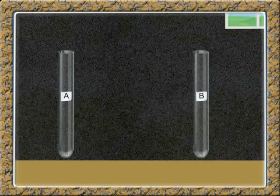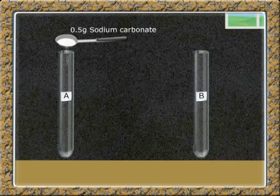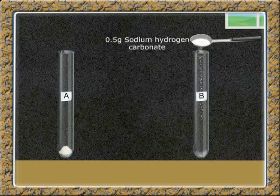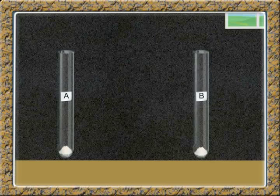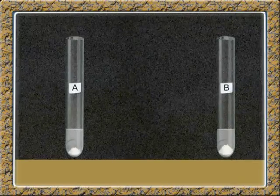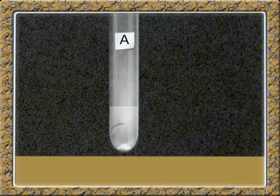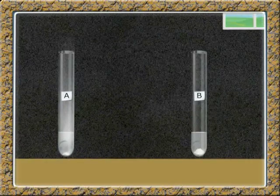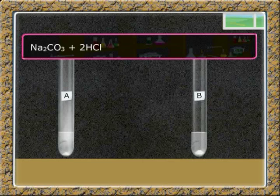Now take two test tubes and label them A and B. Take about 0.5 grams of sodium carbonate in test tube A, and in test tube B add 0.5 grams of sodium hydrogen carbonate. Add 2 ml of dilute hydrochloric acid to both test tubes. In test tube A, sodium carbonate reacts with hydrochloric acid to form sodium chloride, carbon dioxide, and water. The chemical equation is: Na₂CO₃ + 2HCl → 2NaCl + CO₂ + H₂O.